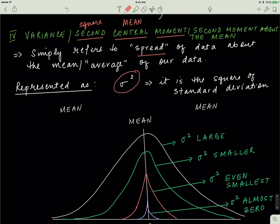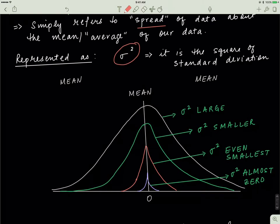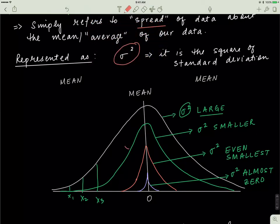We represent variance by the standard deviation squared. The first central moment is just the standard deviation, and the second central moment is the variance around the mean. For a continuous data set, if the spread of your individual values of x is really large around the mean, the variance is large. If the spread becomes smaller — meaning values are closer to the mean — the variance is small.